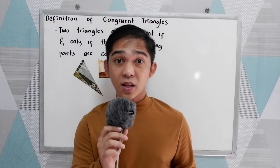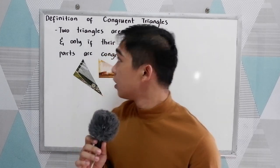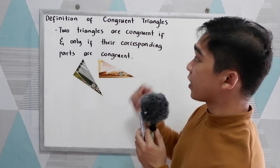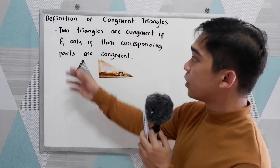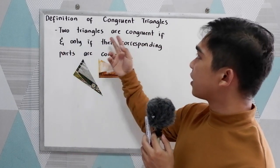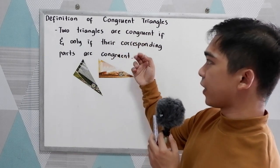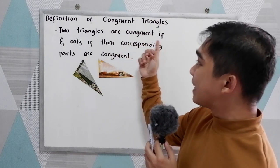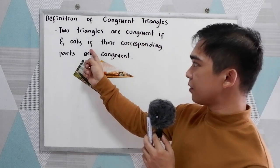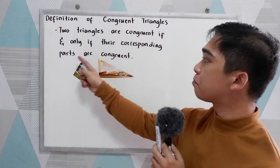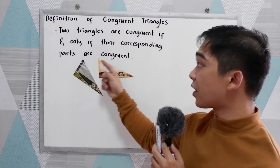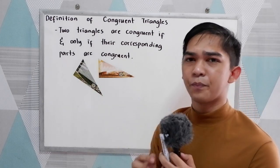Good day everyone. Today we will be discussing congruent triangles. Let's start with the definition. Two triangles are congruent if and only if their corresponding parts are congruent.